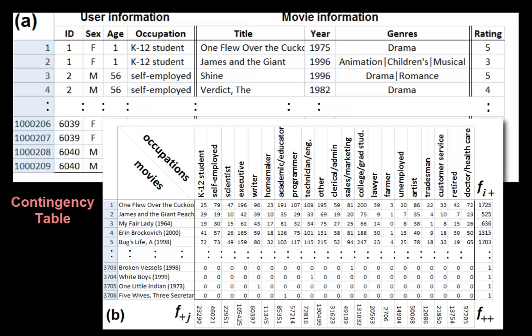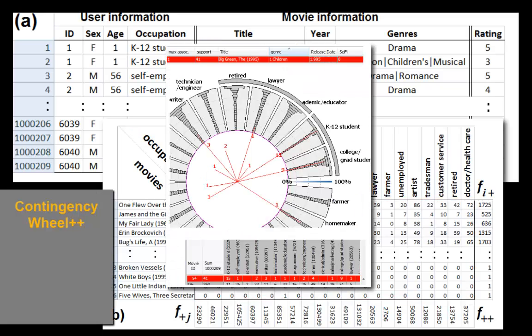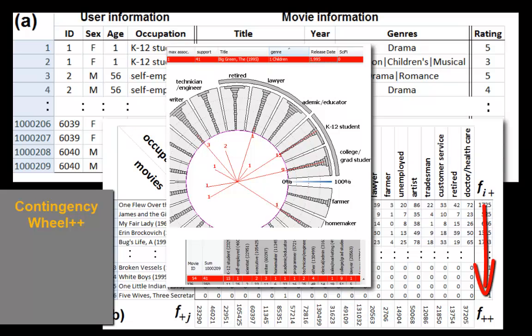Especially when they grow large, such tables are rich of information that are hidden between the lines. Contingency Wheel Plus is a new visual analytics technique to extract non-trivial patterns from large contingency tables having few columns but thousands of rows.